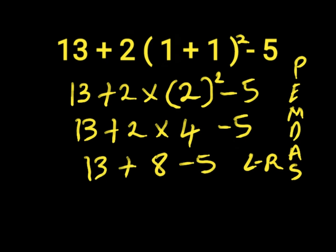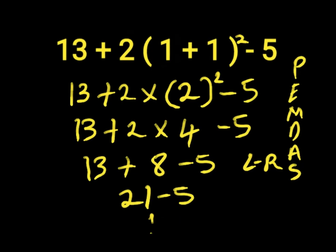So, we solve our addition before subtraction because addition and subtraction have equal priorities and we move from left to right. So, 13 plus 8 will give us 21. So, 21 minus 5 will give us 16. So, 16 is the right answer to this expression.